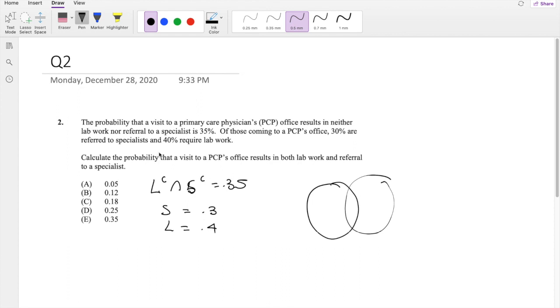And they're looking for the probability that it results in both lab work and referral. So we know if this is lab and this is specialist, neither lab work nor specialist, which is the outside, adds up to 0.35.